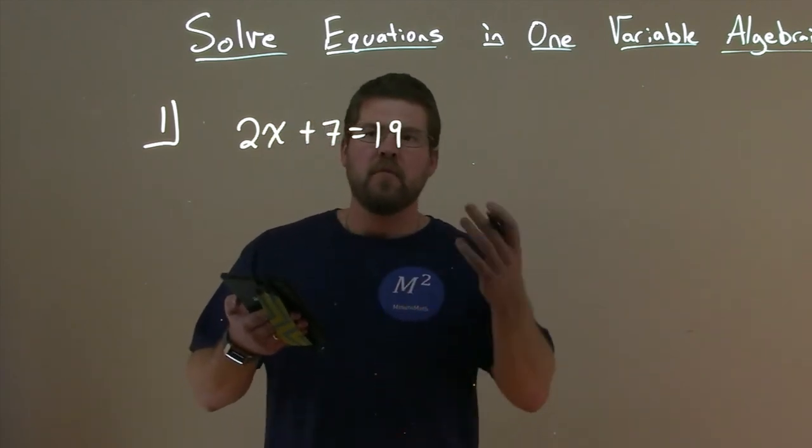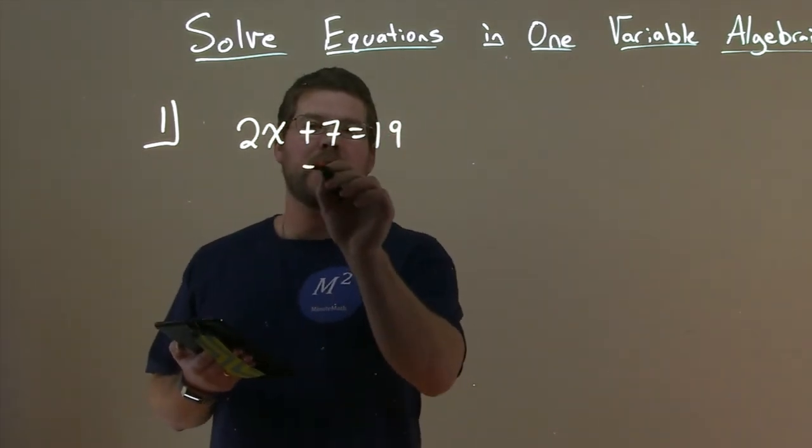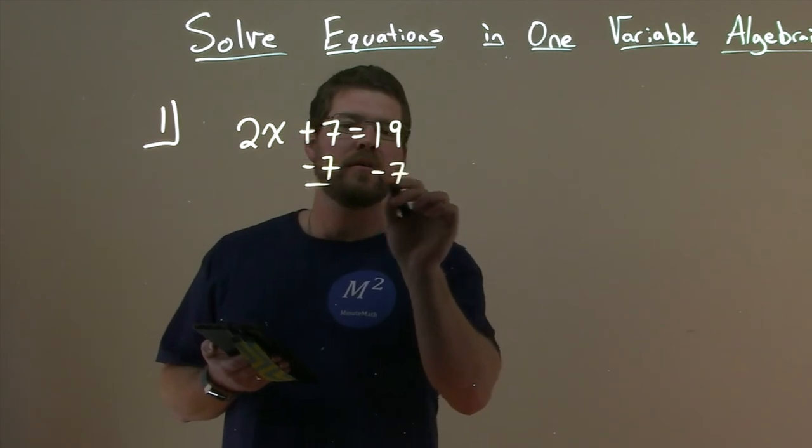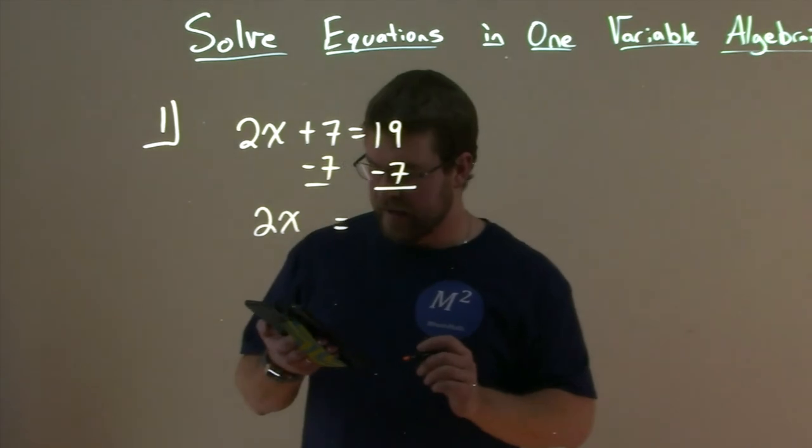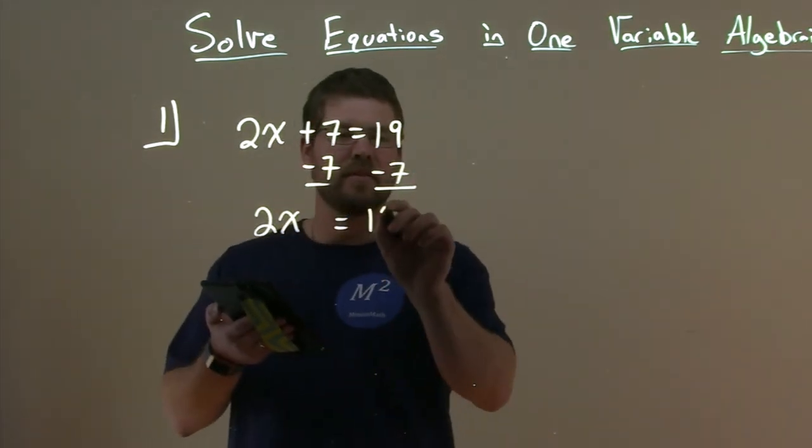Well, how do we solve this? First step here is we want to subtract 7 from both sides. That leaves us with 2x left on the left, and on the right, 19 minus 7 is 12.